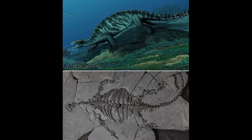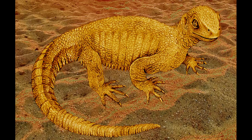More recently in 2018, another stem turtle called Eorhynchochelys from 230 million years ago was described. Not only being older than Odontochelys, it's also less derived as it lacks both a plastron and carapace, but still has broadened ribs. Curiously, while having teeth, it also had a beak, which the later Odontochelys didn't possess. Perhaps Eorhynchochelys evolved the beak independently, or the beak was secondarily lost in Odontochelys. In either case, it shows that the evolution of the beak in turtles wasn't a straight path.